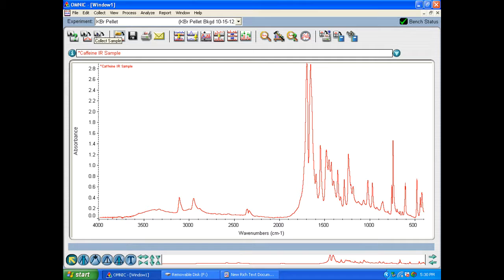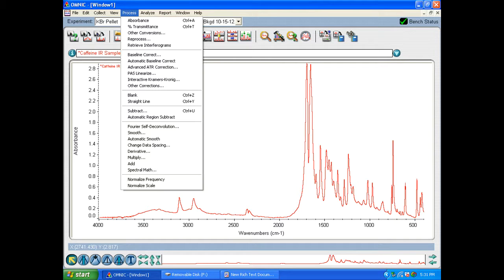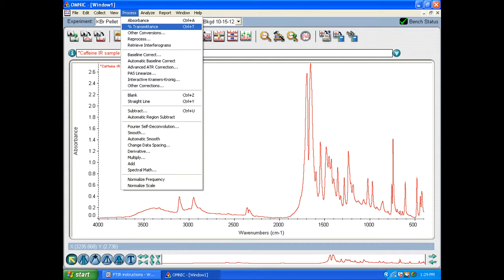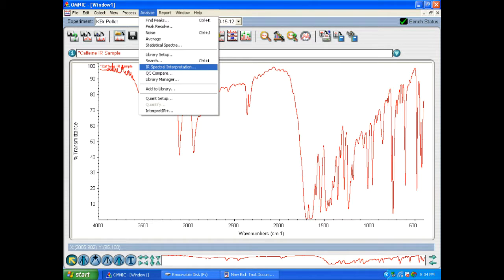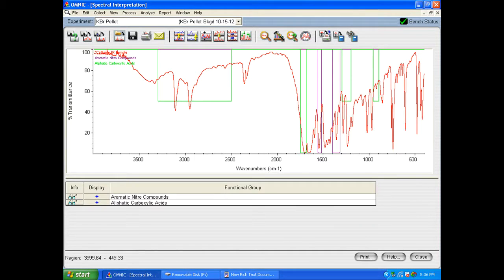Now that we've gotten rid of that old spectra, now we can turn this one into percent transmittance by going up at the top to the process tab and go to percent transmittance and click that. And this is what your spectra will look like after you've adjusted for the percent transmittance. So all of the different peaks here correspond to different functional groups within the molecule.